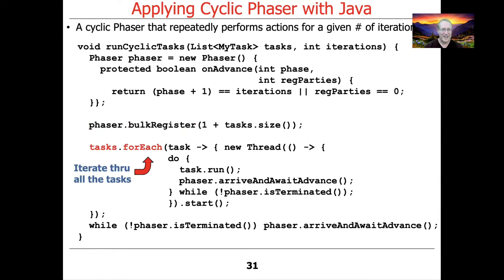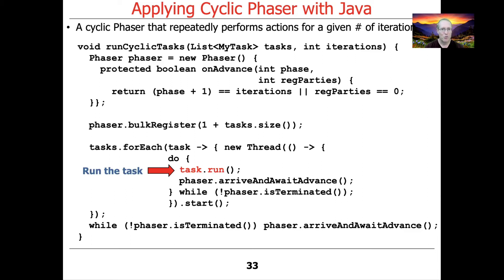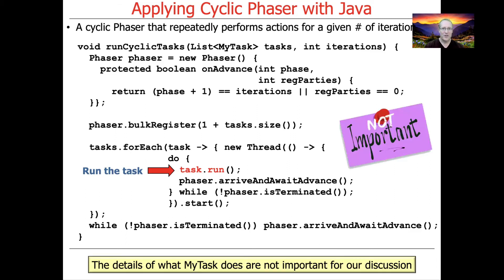We then iterate through the tasks using the forEach method. For each task we make a new worker thread and start it. Inside the thread, we run a do-while loop, and the very first thing we do is call task.run(). So there is no entry barrier here — we just run the task. You can go look at the code to see what the tasks do, but it's not really the important part here.